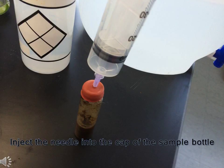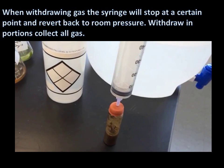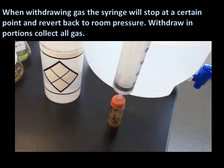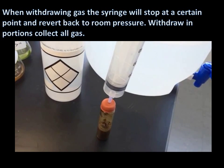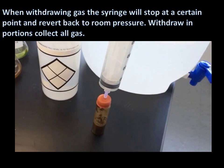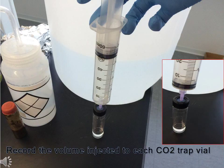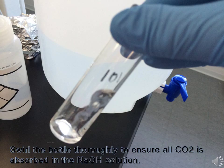Inject the needle into the cap of the sample bottle. With the gas withdrawn into the syringe, inject the gas into the CO2 trap vials and record the volume injected. Swirl the CO2 trap vials to ensure the hydroxide solution has absorbed all of the CO2 in the gas.